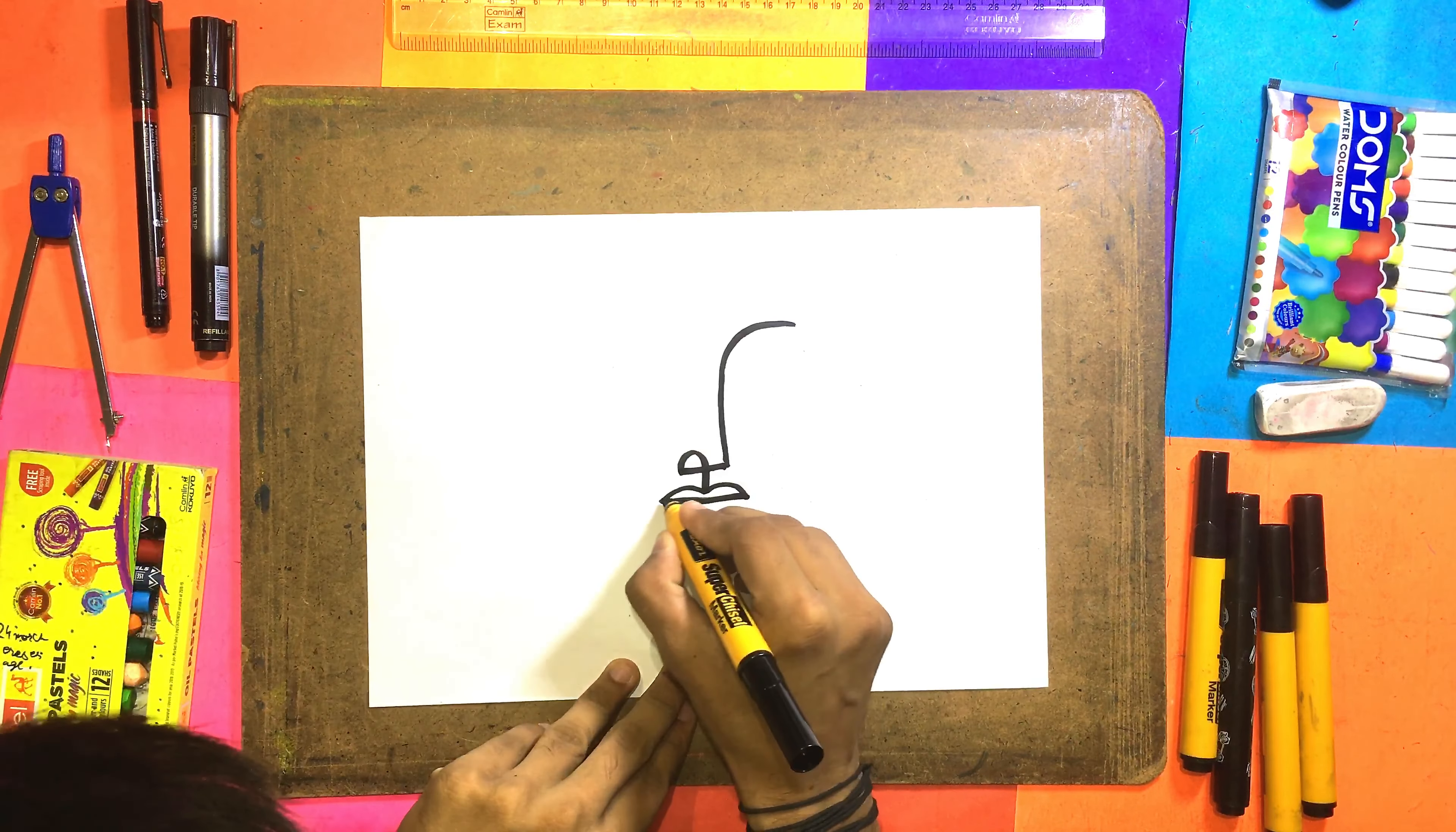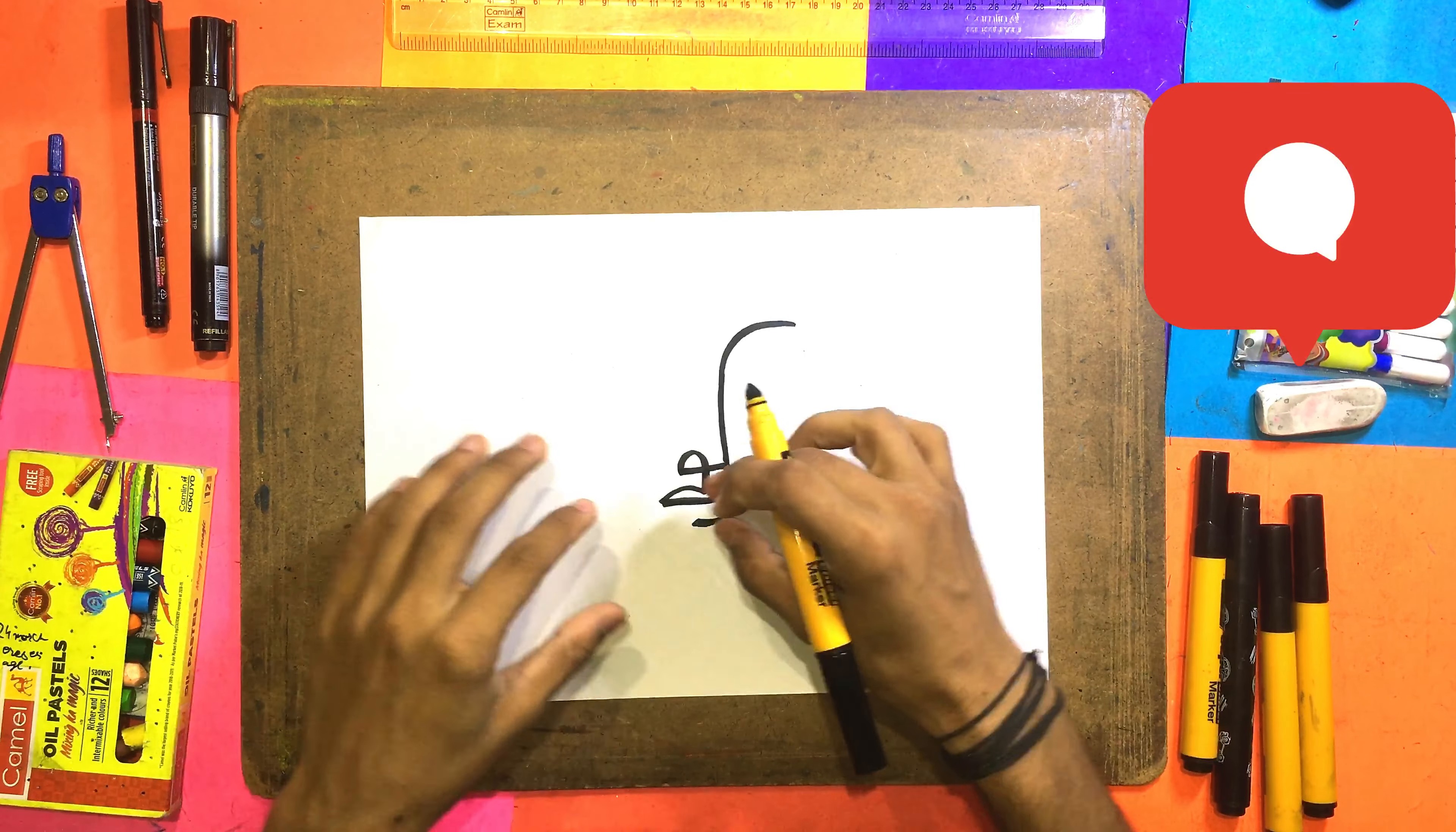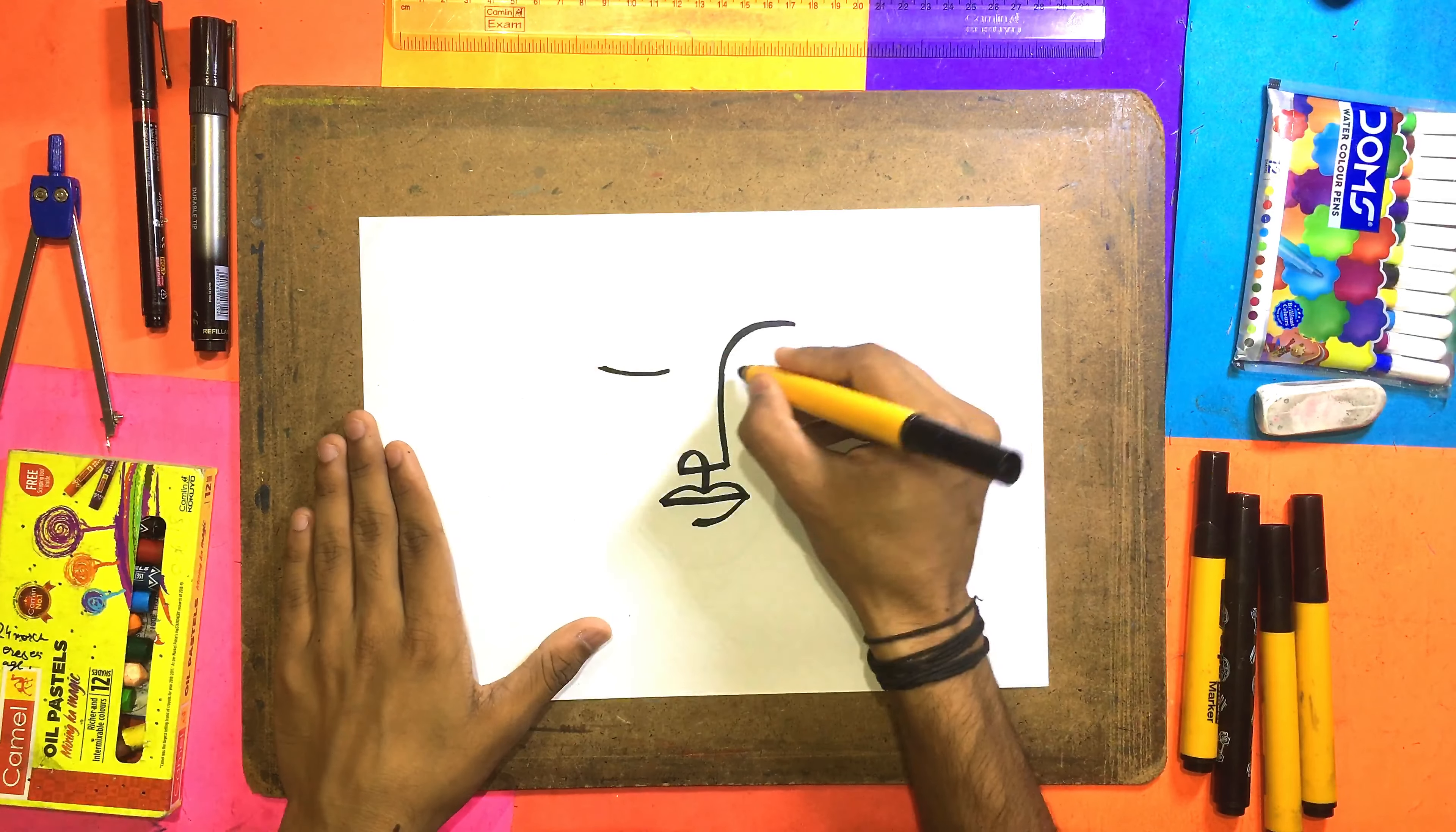Then we will join us, correct? Then here we will make like this line, it will make the face down, okay? Then here we will make eyes, eyes. Here we will make eyes, here an eyebrow, here an eyebrow.